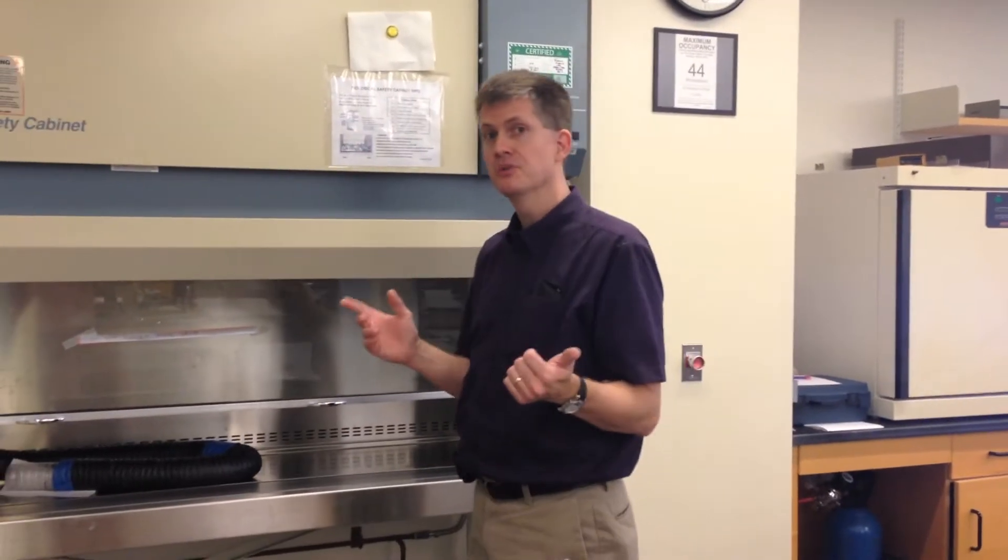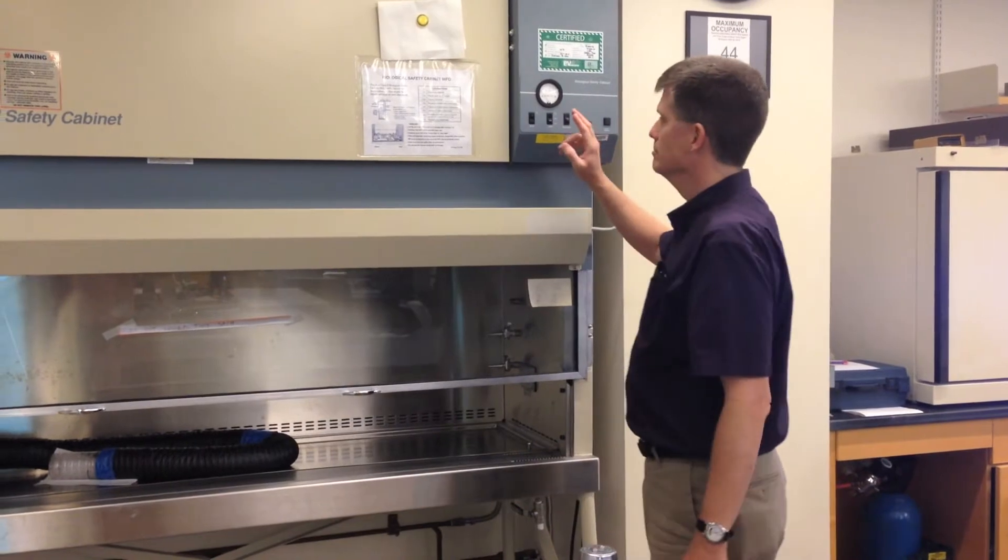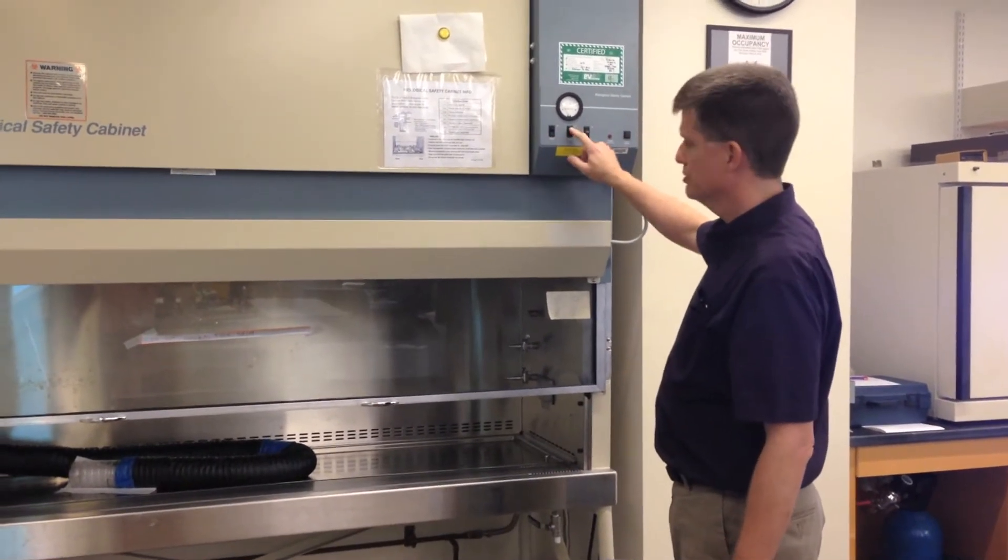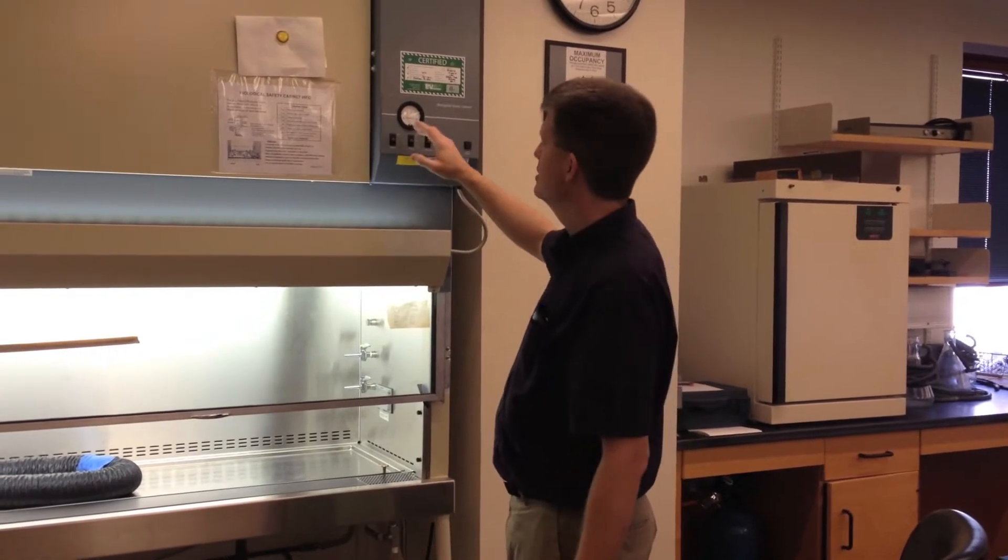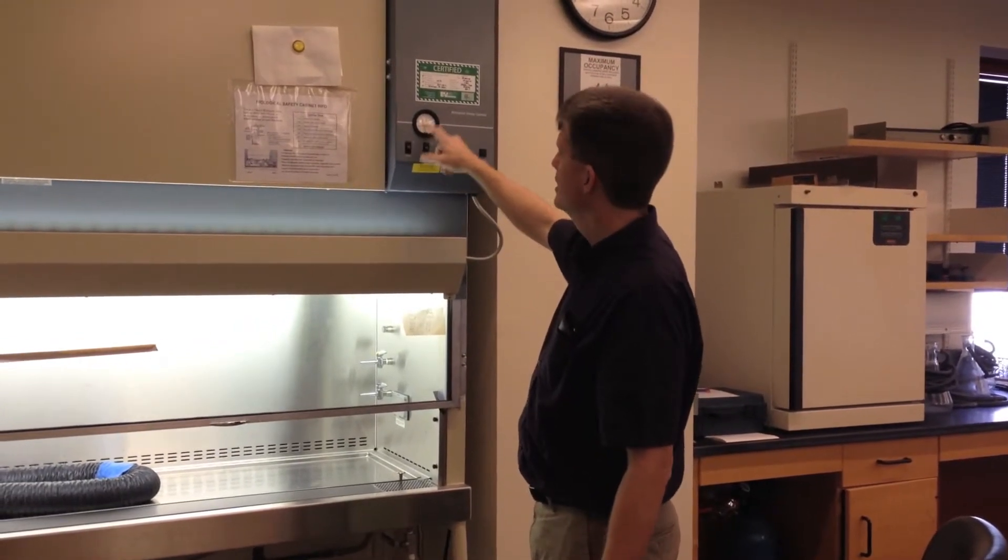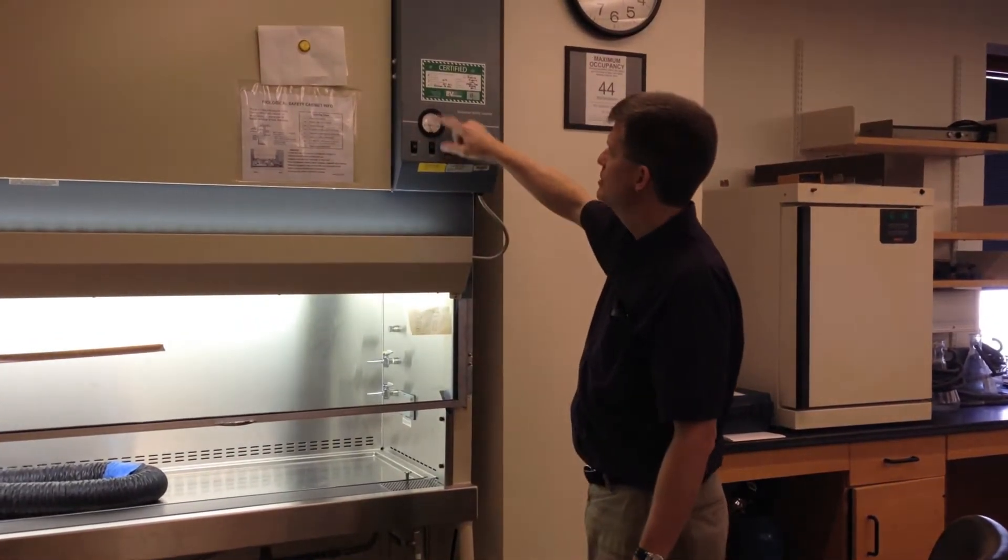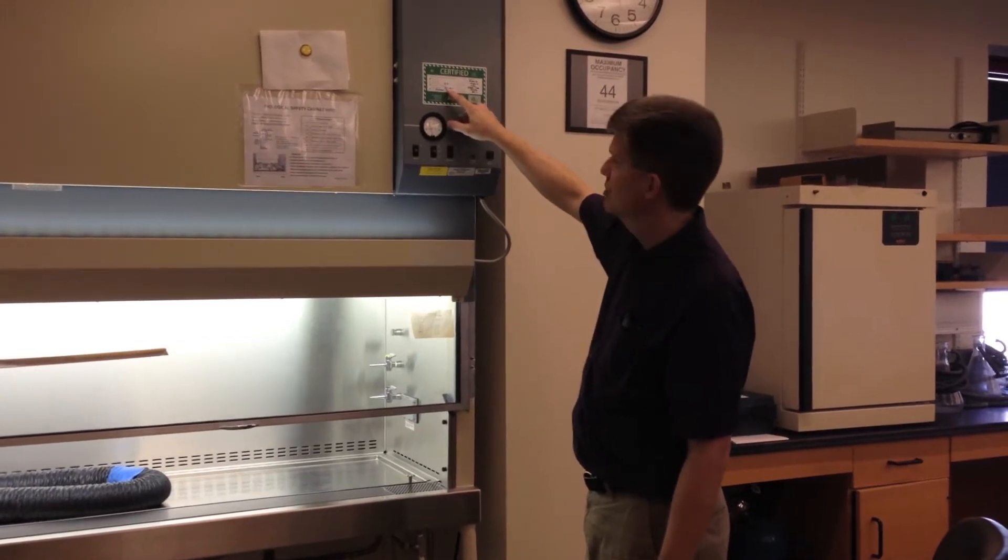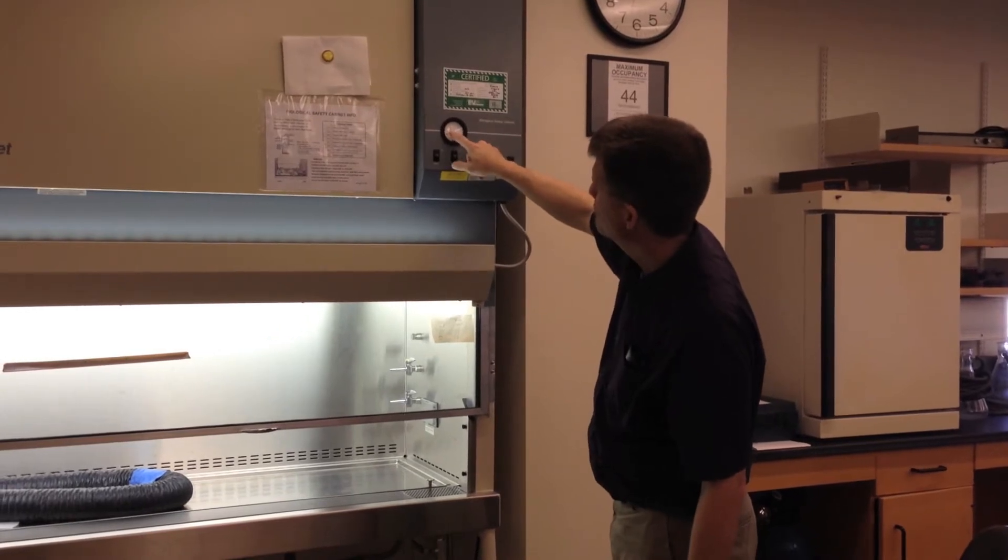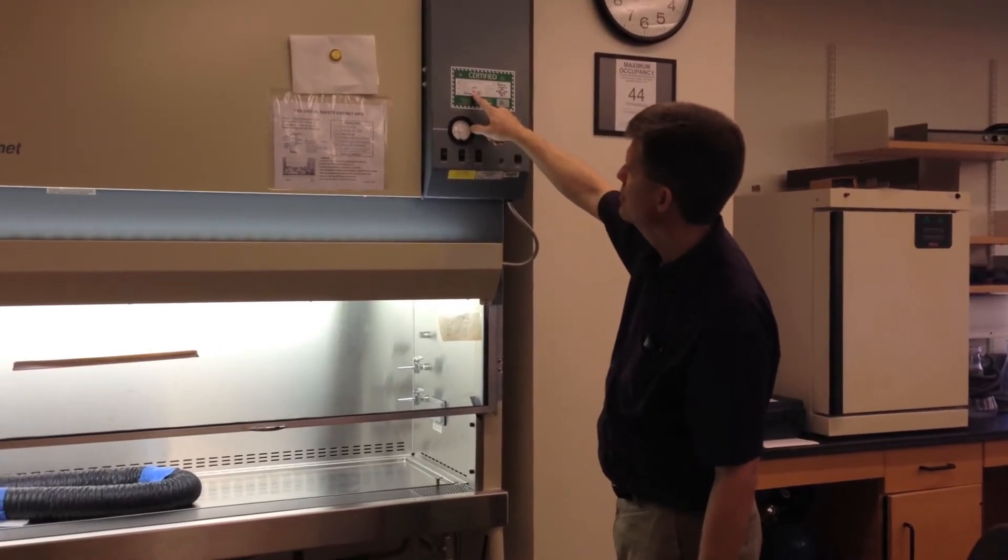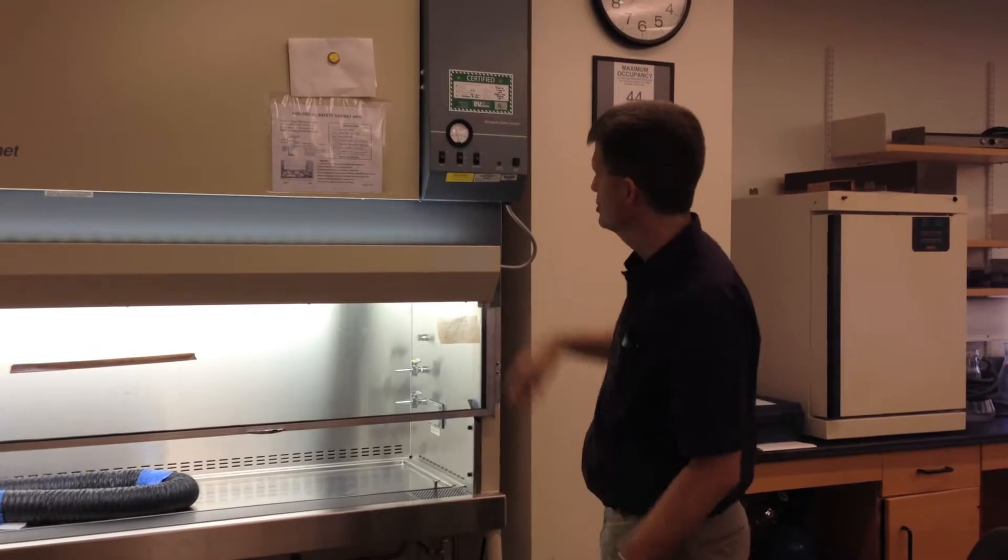When you're starting to use a cabinet, the first thing you want to do is turn it on. Some older biosafety cabinets will let you turn the light on without the blower on. Turn on the light and the blower, then check what the pressure gauge is reading and compare it to what's on the certification sticker to make sure nothing has changed with the HEPA filters. I'm seeing somewhere between 0.4 and 0.5, and the number on the sticker says 0.45, so that sounds good.